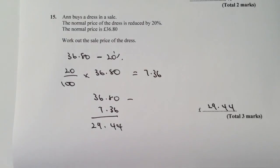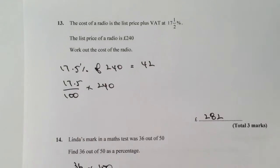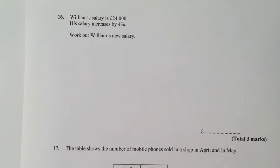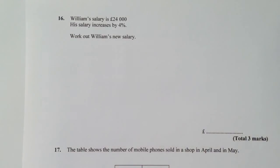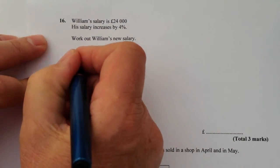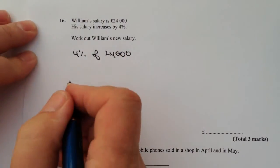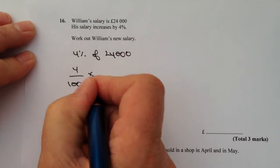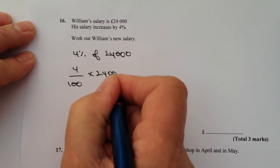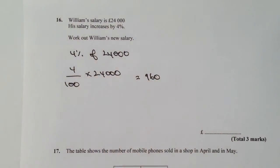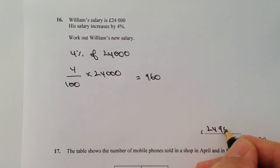On to the final page of this series — two questions to work through. The first: William's salary is £24,000 and he has an increase of 4%. Work out his new salary. We're working out 4% of £24,000 — the same as saying 4 out of 100 multiplied by £24,000. Plug that into your calculator and you get £960. Add that to the original £24,000 and his new salary is £24,960.